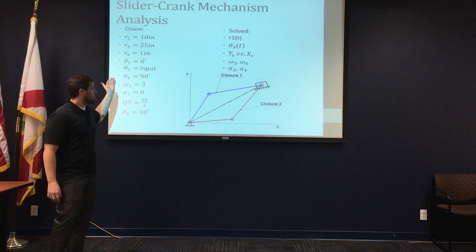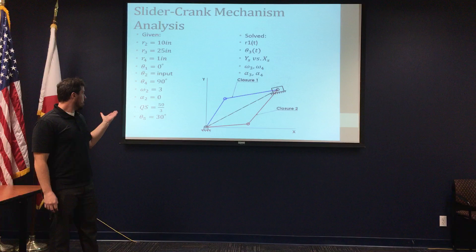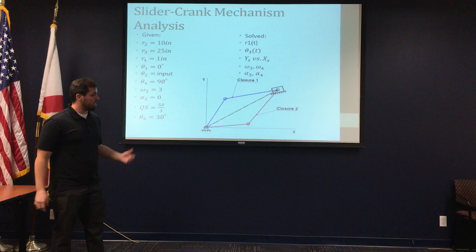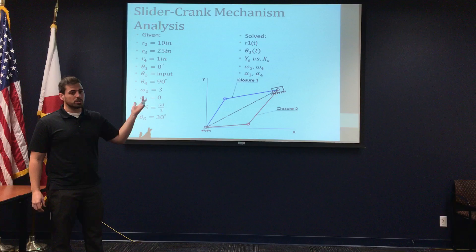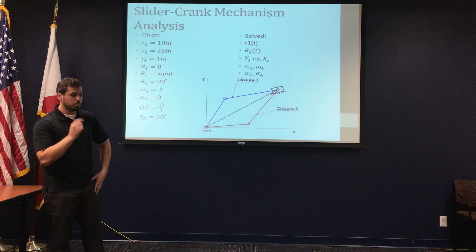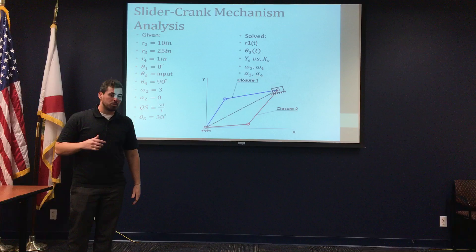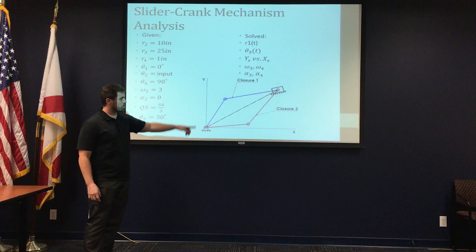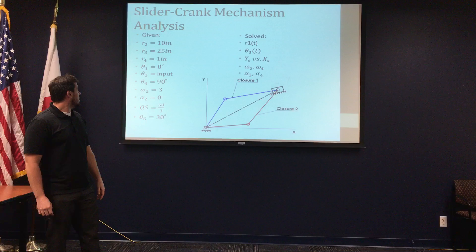Here is our kinematic analysis of the slider crank. Our inputs are given on the left-hand side as R2, R3, R4, theta 1, theta 2, theta 4, omega 2, alpha 2, Qs — the distance to a point on the coupler link — and theta 5, which is the angle at which the point is located. We had to solve for R1, which is a function of time, theta 3, which is also a function of time, Ys versus Xs — the position of the point on the coupler link — omega 3, omega 4, alpha 3, and alpha 4. The blue line shows closure 1 and the red line shows closure 2 for the slider crank.